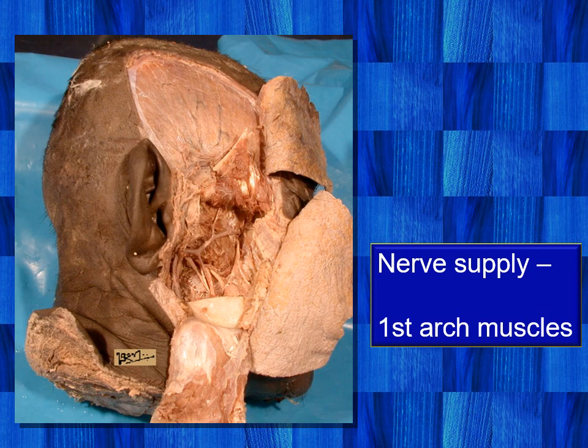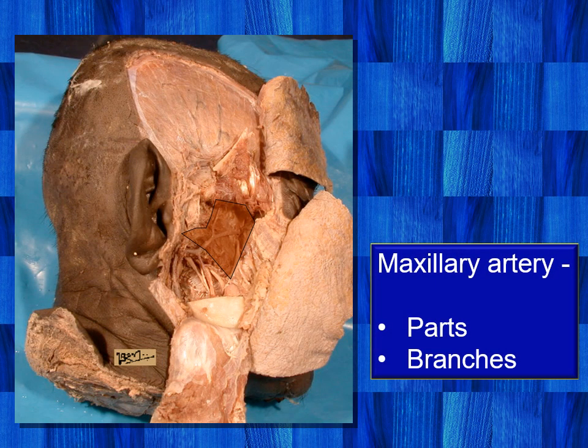All these muscles of mastication are supplied by the mandibular nerve, which is the nerve of the first arch. With a flavor of embryology, it is obvious that these are the first arch muscles having their own nerve supply — namely the mandibular nerve.